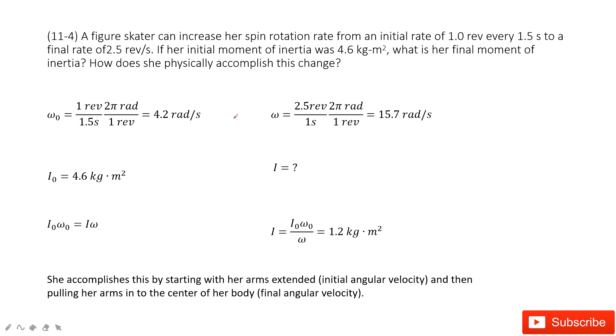In this problem, we have a person who increases her spin rotation from an initial angular velocity ω₀ to a final angular velocity ω, and these two quantities are given.